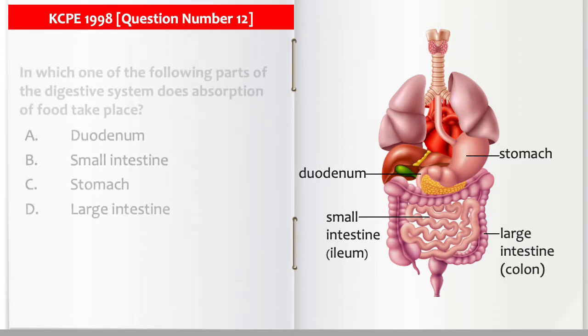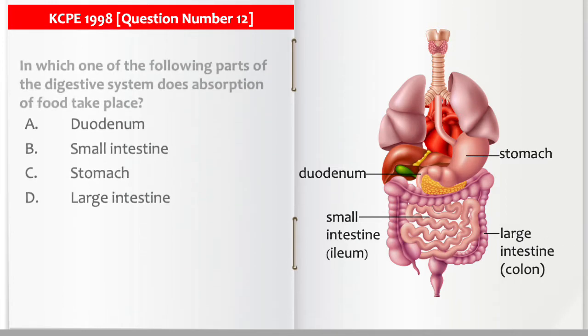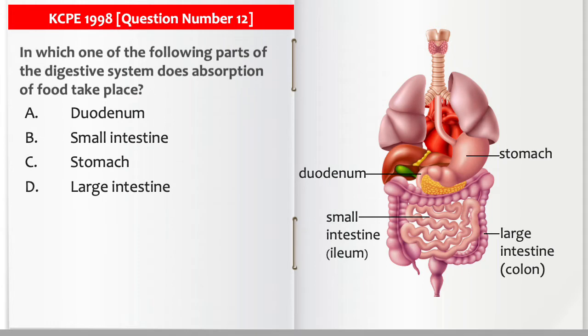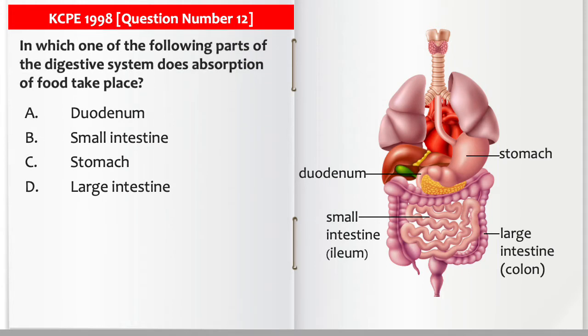In which one of the following parts of the digestive system does absorption of food take place? In the duodenum, in the small intestine, in the stomach, or does it take place in the large intestine?